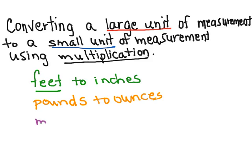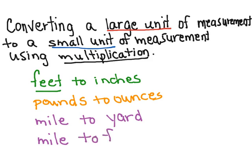If we want to change a mile, which is a large unit, to how many yards it is equal to, we're changing a large unit to a small unit, so we're going to use multiplication. We may also change a mile to feet. So again, we're going from a larger unit of measurement to a smaller unit, and we're going to see how we use multiplication to do these things.